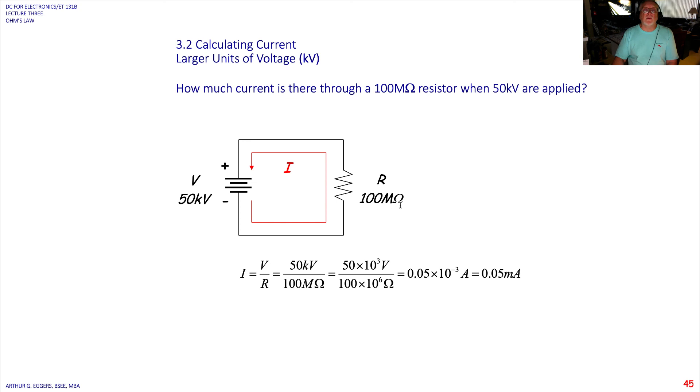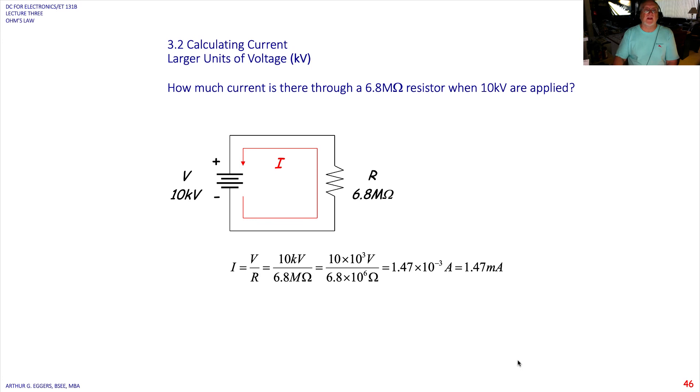100 mega ohm resistor, 50,000 volt source. We get a current of 0.05 milliamps. 100,000 volts, 6.8 meg resistor. Again, when we move the meg 10.6 out of the denominator into the numerator, what we're left with is 10 to the minus third, 1.47 milliamps of current.